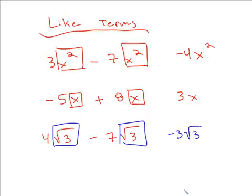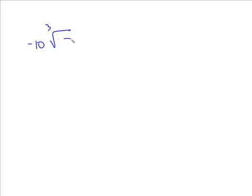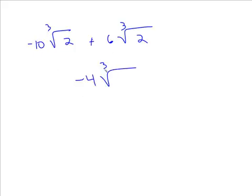Let's say we have negative 10 cube root 2 plus 6 cube root 2. These are like radicals because you have cube root 2 and cube root 2. So negative 10 and positive 6 gives you negative 4, and nothing changes with the radical part.